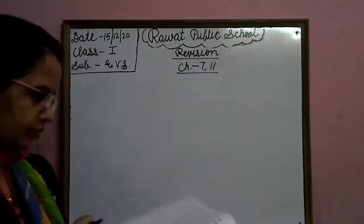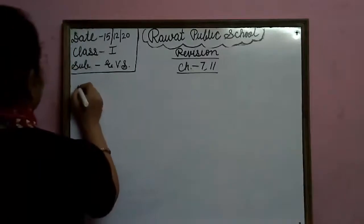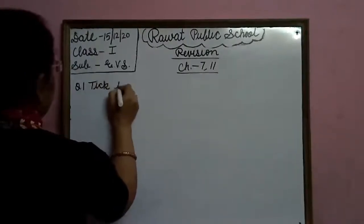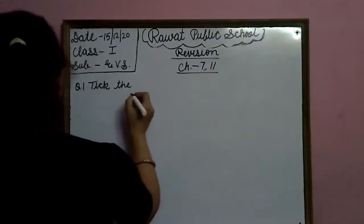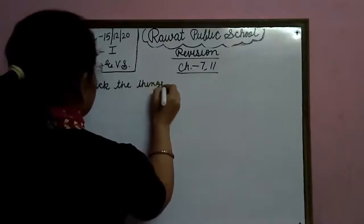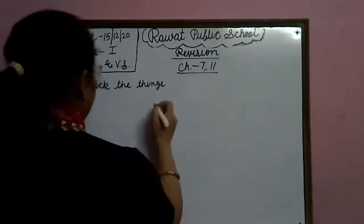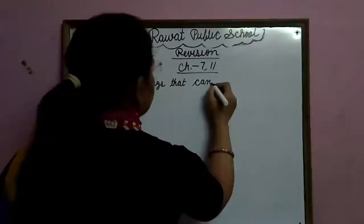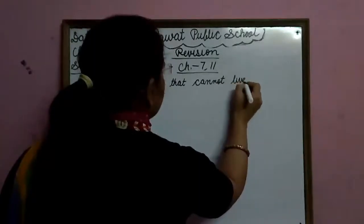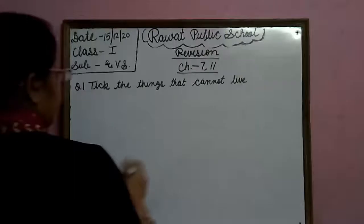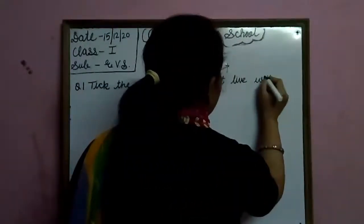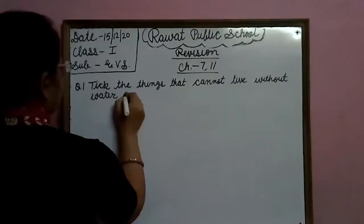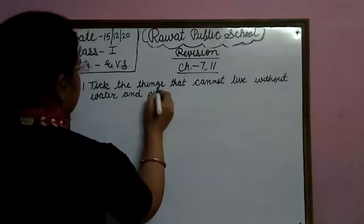So children, Question Number 1: Tick the things that cannot live without water and air. T-I-C-K the things T-H-I-N-G-S that cannot live without water W-A-T-E-R and air A-I-R.